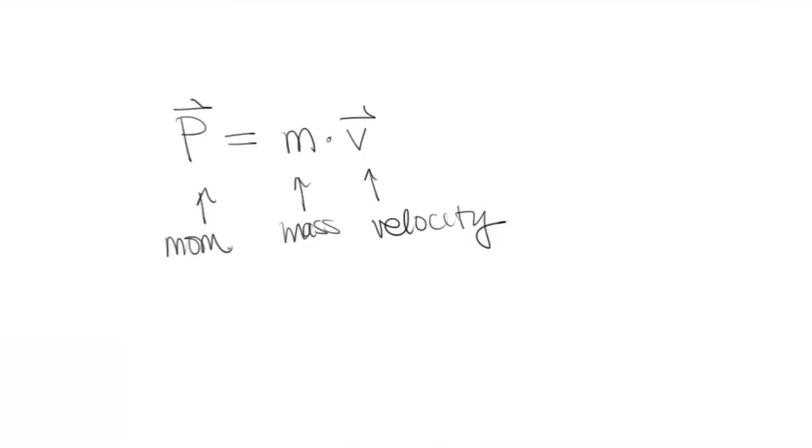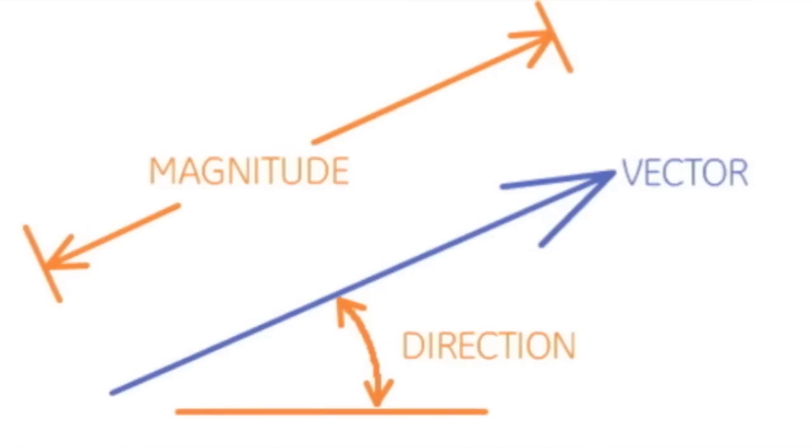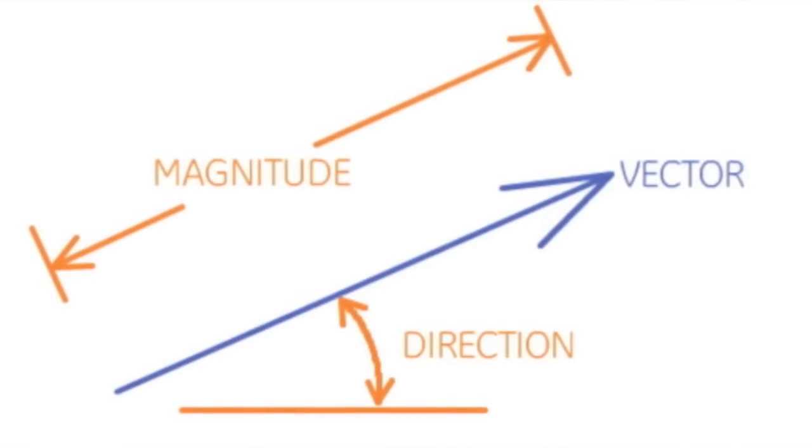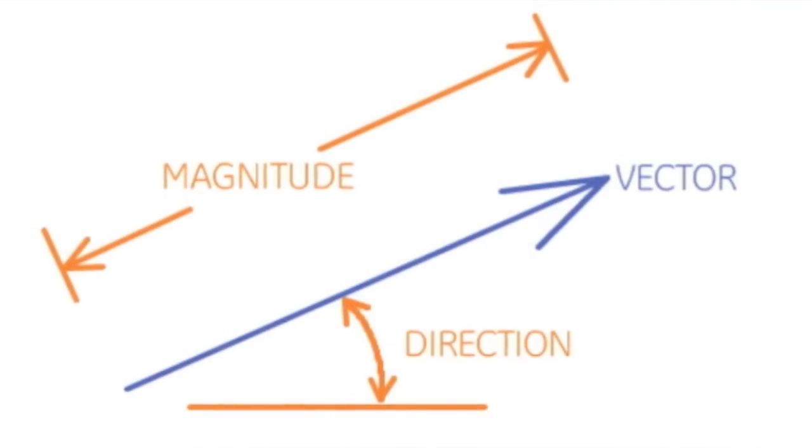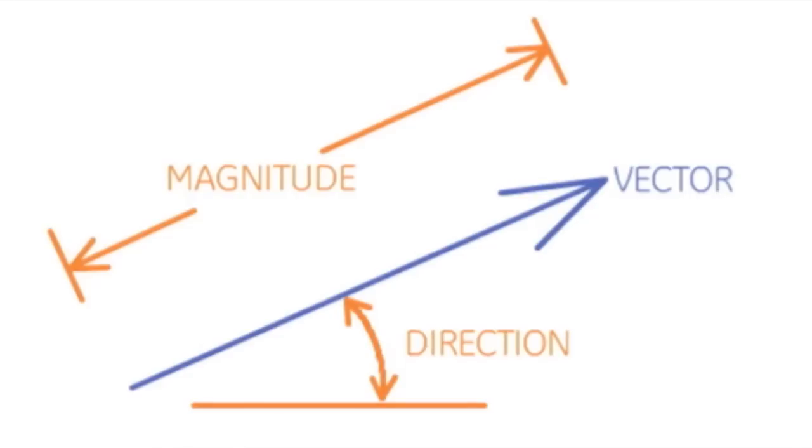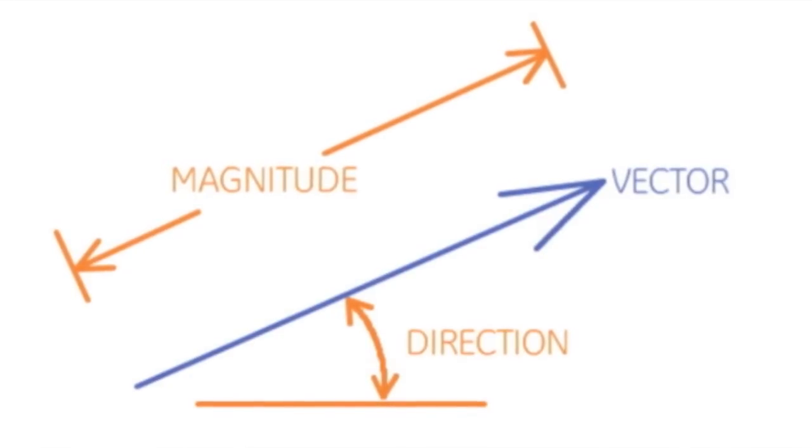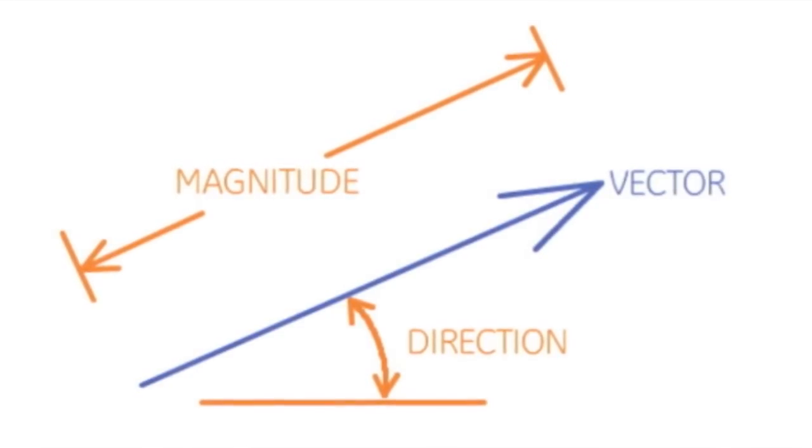Now, notice that linear momentum and velocity have little arrows over them. This signifies that they are vector quantities, meaning that they have a magnitude and a direction. Let's say x, y, z, north, south. It depends on the coordinate system you choose.